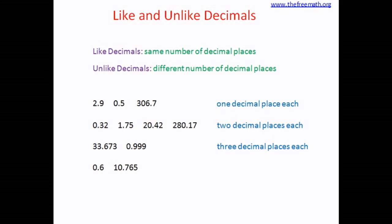In the next example, you can see that the first decimal 0.6 has one decimal place, whereas the second decimal 10.765 has three decimal places. That means these two decimals are unlike decimals, because there are different numbers of decimal places.